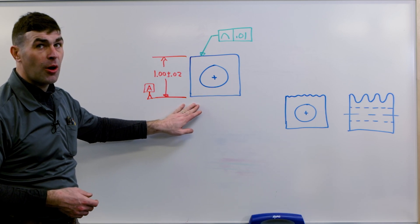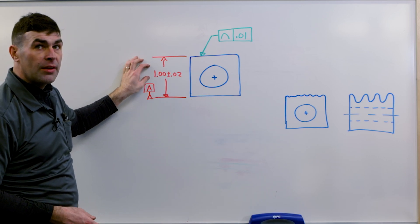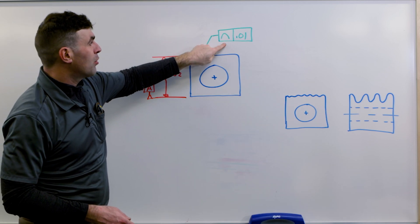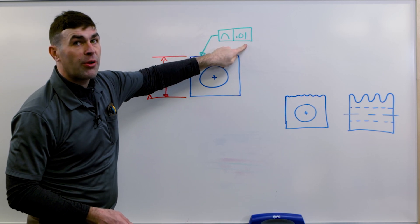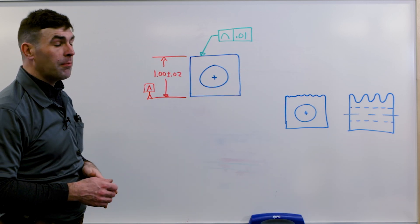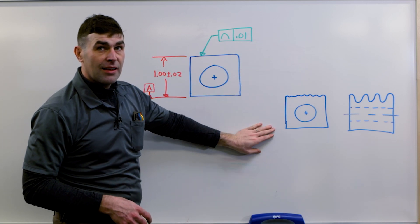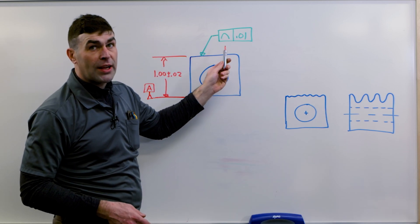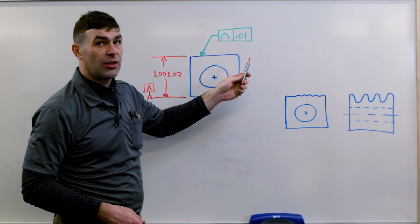We have a simple block with a hole in it plus or minus locating this surface. We've got profile of a line, tolerance value, no datum reference. I've indicated a datum feature symbol here we'll use it in a minute. This is a possible part.